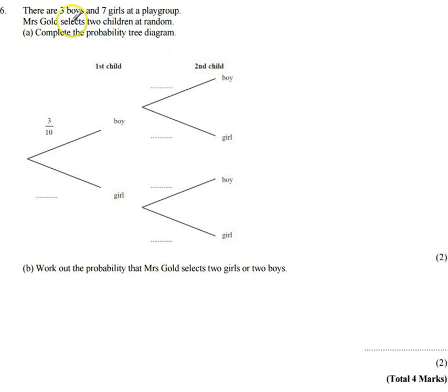So the first child that she picks, well there's ten children all together, so there's three tenths of a chance that it's going to be a boy and seven tenths chance that she's going to pick a girl.